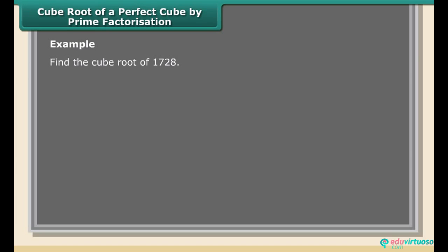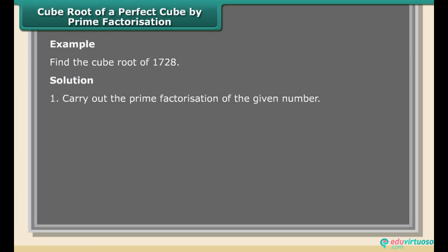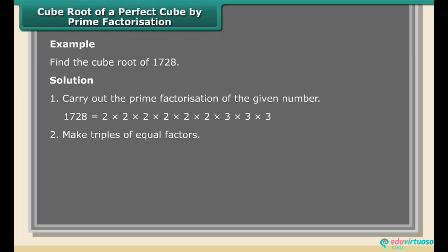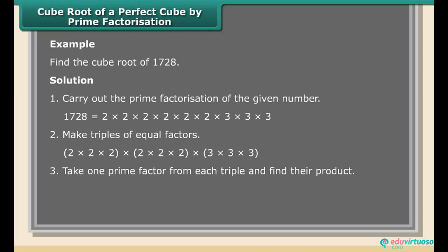Cube root of a perfect cube by prime factorization. Example: Find the cube root of 1728. Solution: Carry out the prime factorization of the given number. 1728 = 2 × 2 × 2 × 2 × 2 × 2 × 3 × 3 × 3 = 2³ × 2³ × 3³. Take one prime factor from each triple and find their product: 2 × 2 × 3 = 12. Therefore ∛1728 = 12.